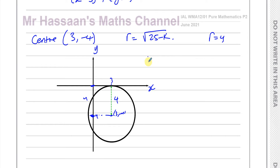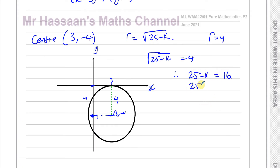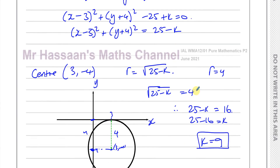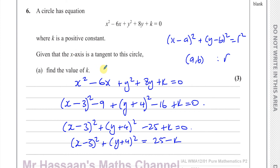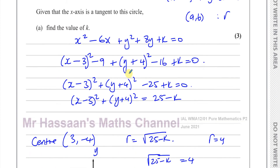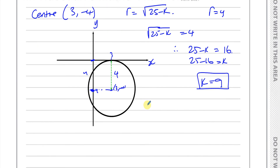So we can say the square root of 25 minus k equals 4. Therefore 25 minus k equals 16, so 25 minus 16 equals k, giving k equals 9. So we've found the value of k.